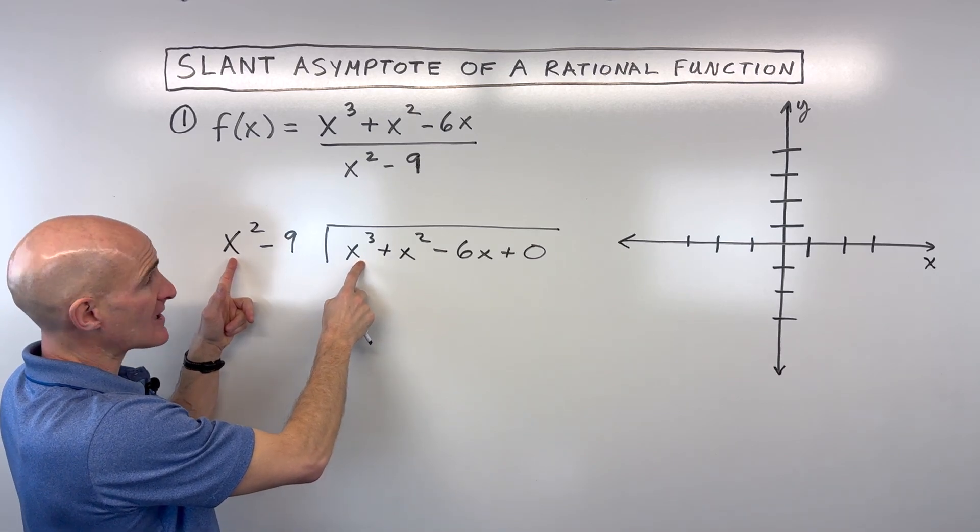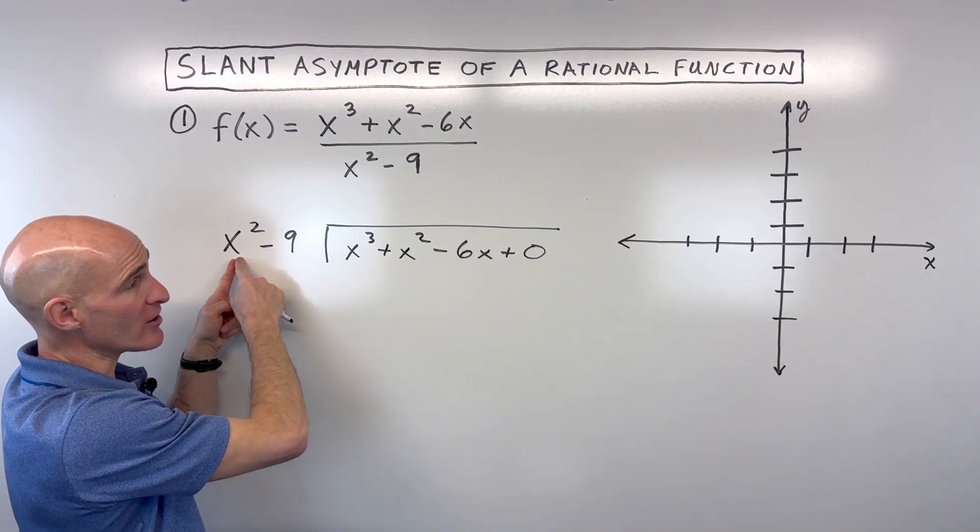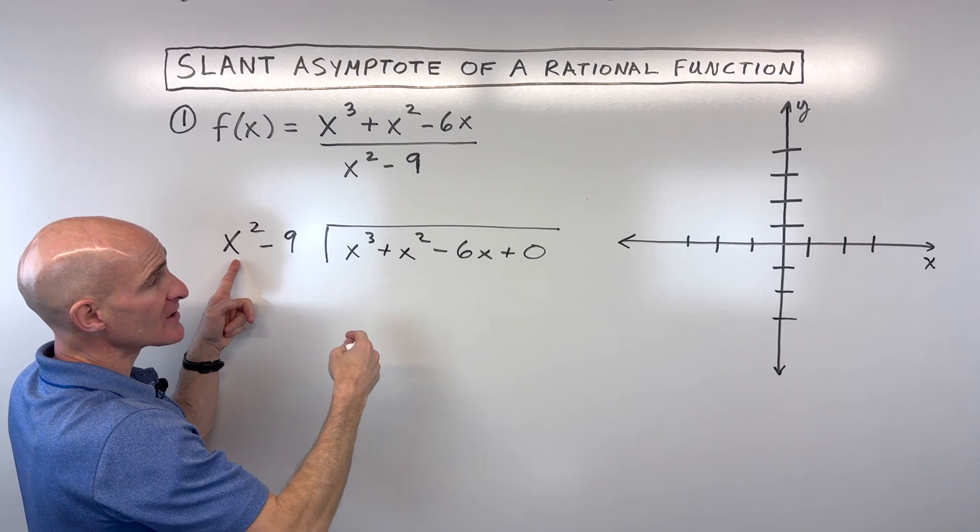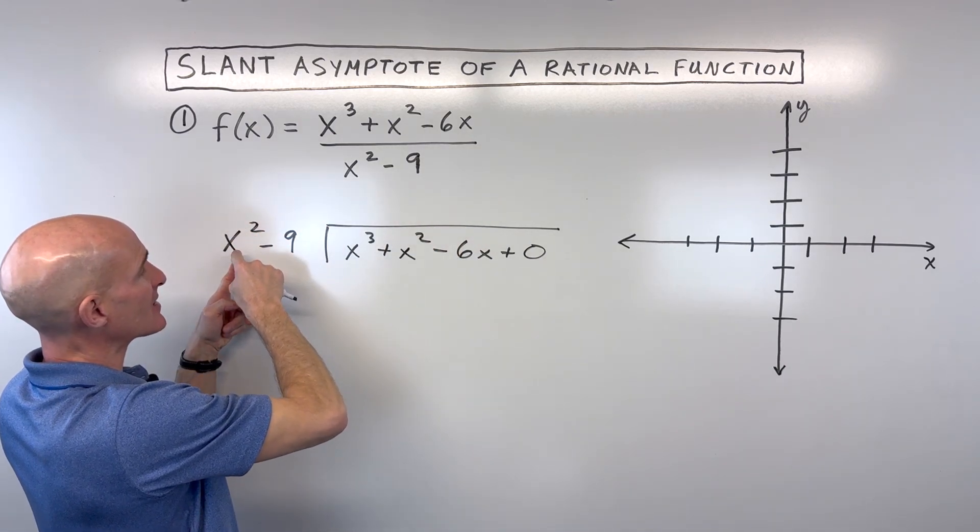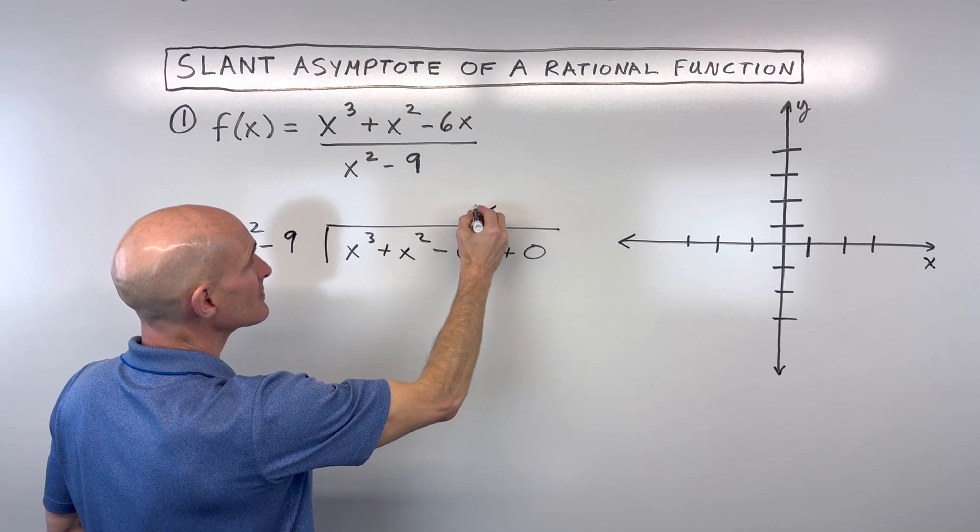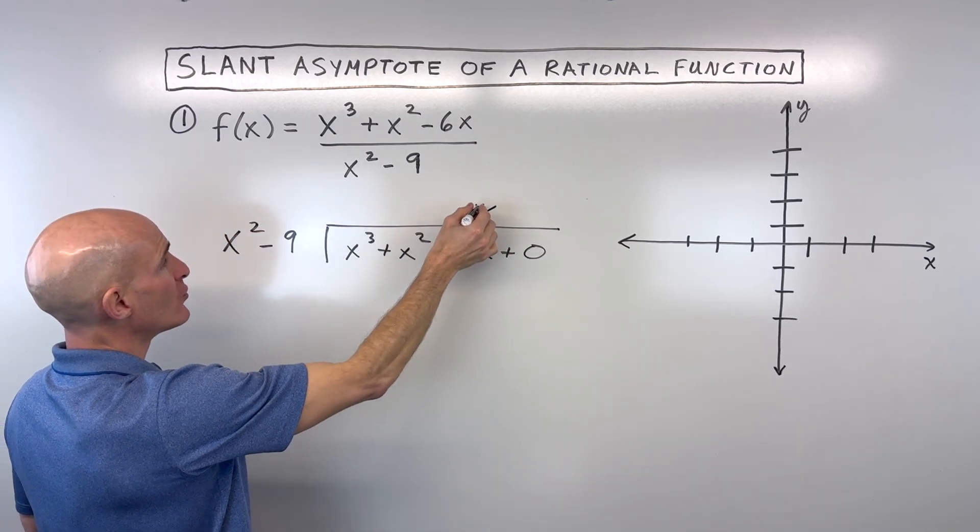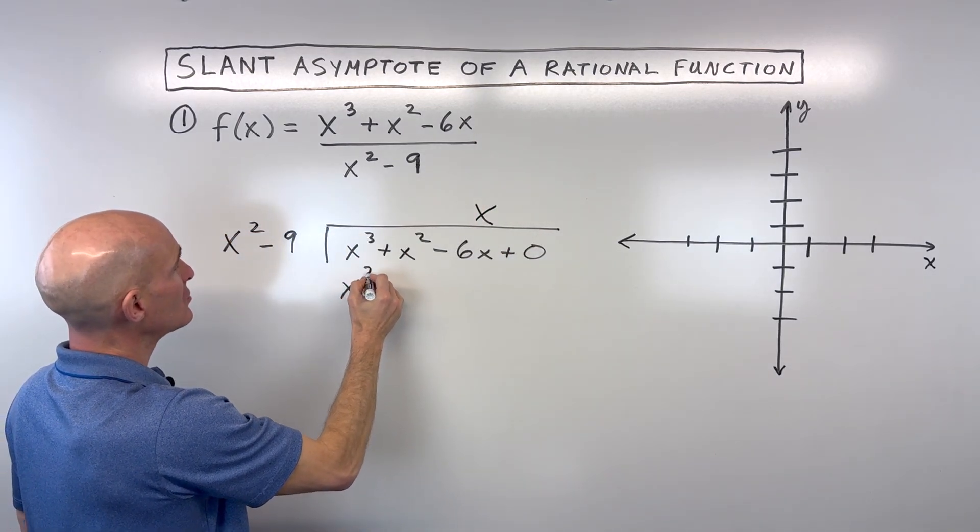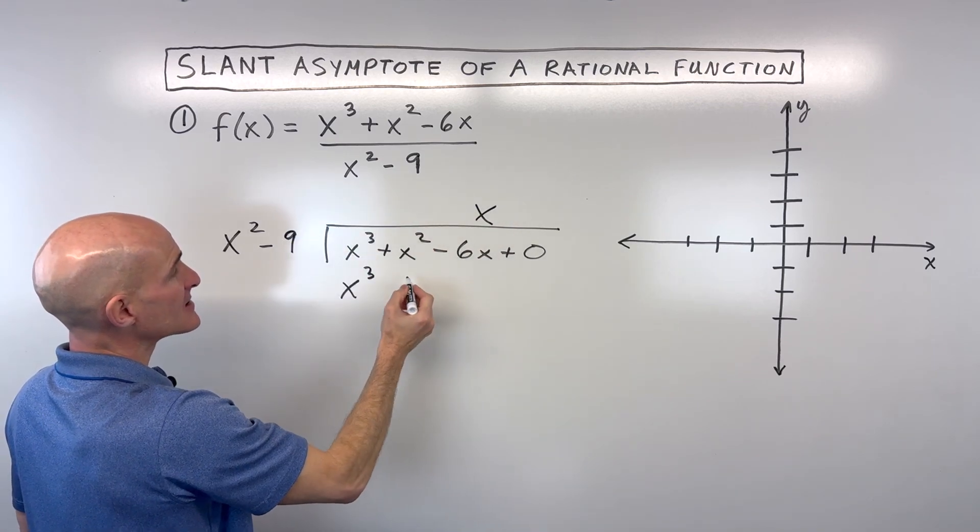Or you could say what's x cubed divided by x squared? Or what I personally like to do is say what times x squared equals x cubed? So in that case, it's going to be x. And when I distribute the x to both of these terms, I get x cubed minus 9x.